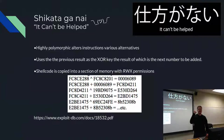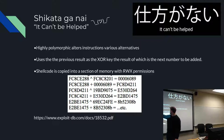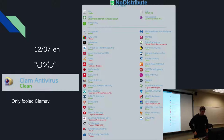Here's Shikata Ga Nai — it translates to 'it can't be helped.' It was a really good polymorphic algorithm when it came out, but since it's become so widespread, AV devs have started flagging it and the process it uses as malicious. With our same package that had 13 detections, it now has 12 — so we fooled one more, specifically ClamAV.